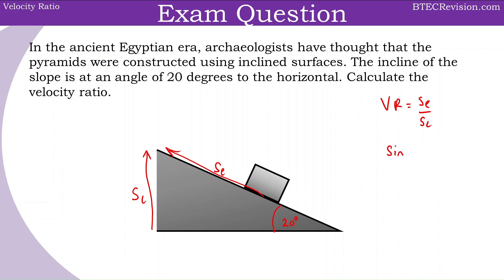Which we know is opposite over hypotenuse, which is what we have. Sin 20 degrees, in this case, is equal to the opposite, which is SL, divided by SE.